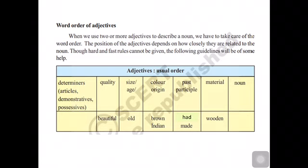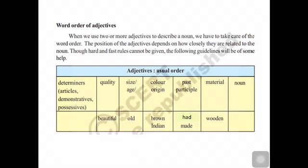Now let us see the order of adjectives. Usually whenever we have two or more adjectives to describe a noun, we take care of the word order. There is a certain order for the position of adjectives and how it is closely related to the noun. The first is the determiners — that is articles, demonstratives, or possessives — and the second is quality, then comes quantity, which means the number.